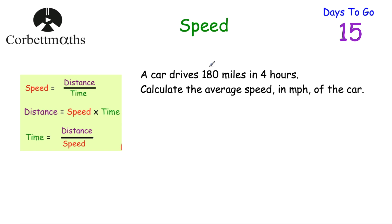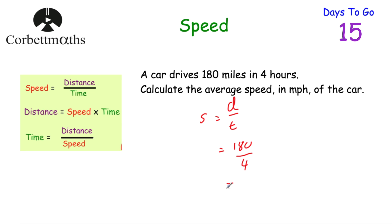Our first question says: a car drives 180 miles in four hours. Calculate the average speed in miles per hour of the car. Feel free to press pause now to work this out. Okay, speed is equal to distance divided by time, so that's 180 divided by 4. And 180 divided by 4 is equal to 45, so the average speed of the car is 45 miles per hour. And if you got that, well done.